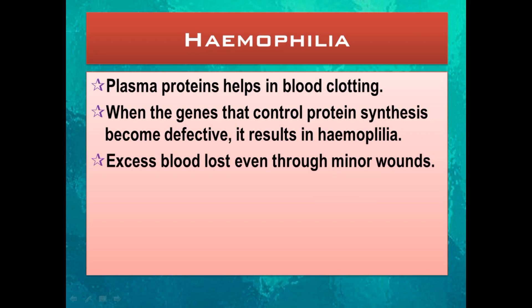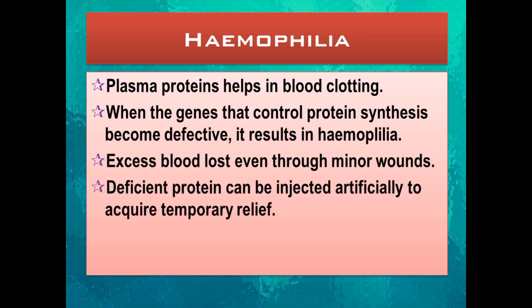The symptoms include excess loss of blood even through minor wounds. Usually when a wound occurs, clotting happens within a few seconds to a few minutes depending on the depth of the wound. But if the blood won't clot after a few minutes, that indicates hemophilia. Deficient protein can be injected artificially to acquire temporary relief, but such people have to take extra care to avoid wounds and injuries. Complete cure is not possible since it is a genetic disease.